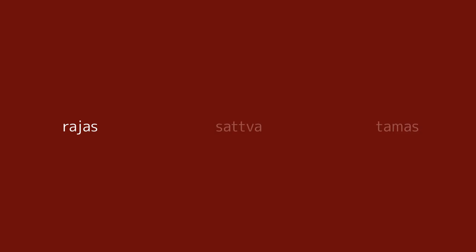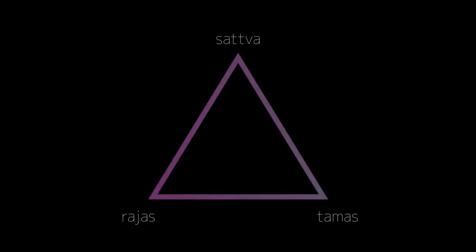Let's understand all of them beginning with tamas. The tamas guna can be described as the one responsible for inertia or inactivity. The rajas guna can be described as the one responsible for motion or activity. And the sattva guna can be described as the one responsible for balancing or self-maintenance. Geometrically, it would look something like this, with rajas and tamas on each side and sattva at the top.